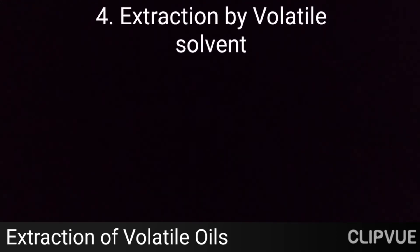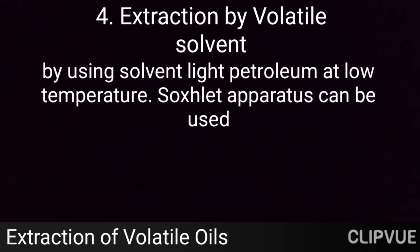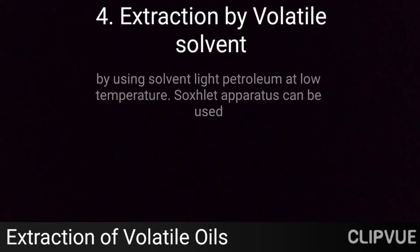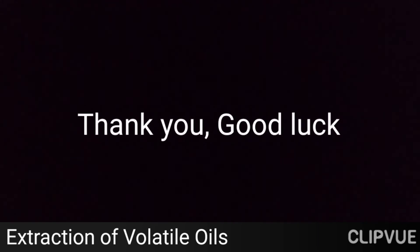The fourth method is extraction by volatile solvent. A solvent such as light petroleum or petroleum ether is used in a Soxhlet extraction assembly at low temperature, since the boiling point is very low and the solvent can evaporate at room temperature. The temperature is maintained at around 35 to 40 degrees. Examples of volatile solvents include petroleum ether and light petroleum. These are the four major methods of extraction of volatile oils. Thank you.